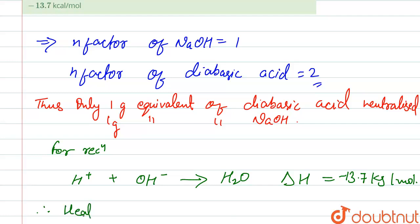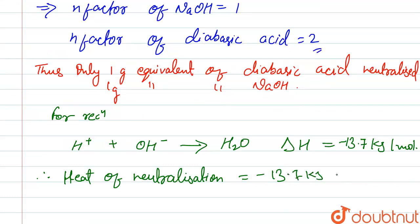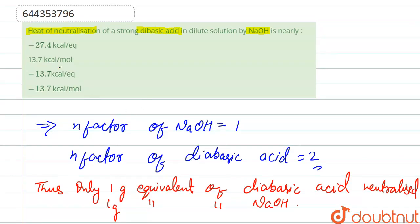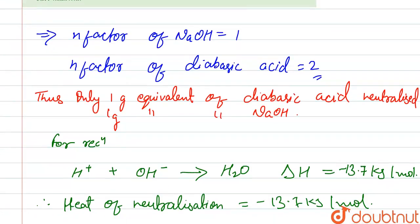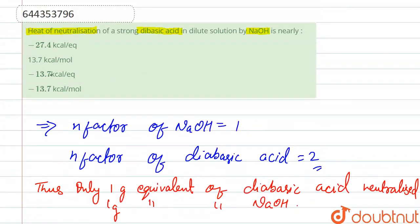So hence the heat of neutralization of a strong dibasic acid in dilute solution by NaOH is minus 13.7 kilojoules per mole. So coming toward our options, our correct option is minus 13.7 kilocalorie per equivalent, so our correct option is option C.